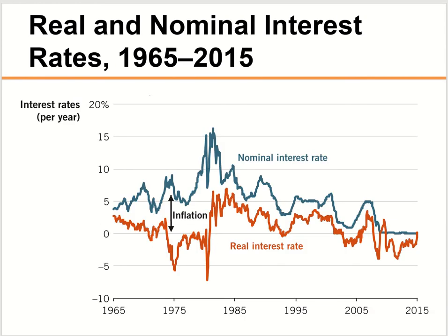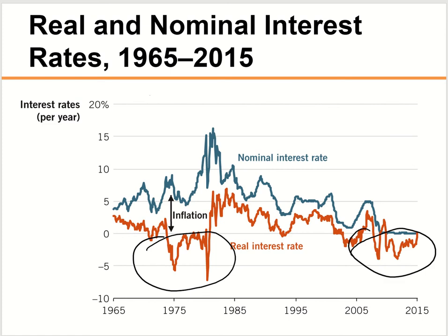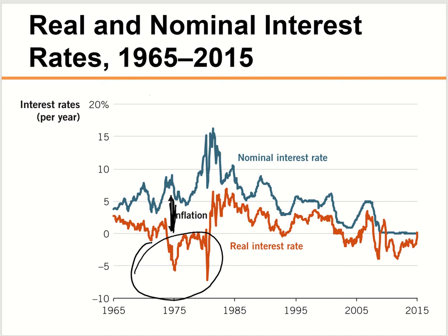Looking at the historical data of nominal and real interest rates: the nominal rate is pretty much always positive, though the last couple of years it's been close to 0.25% — almost zero. But notice the real interest rate has sometimes been negative. For example, around 1984–85, even though the bank might pay you 10–15% interest rate, you were actually losing money because inflation was so high.